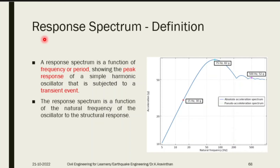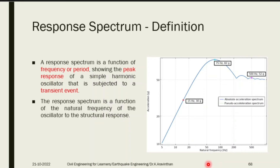A response spectrum is created by combining the response — acceleration, velocity, or displacement — on the y-axis with the time period or natural frequency on the x-axis. This is very much used to design structures, and there are different types of response spectra.